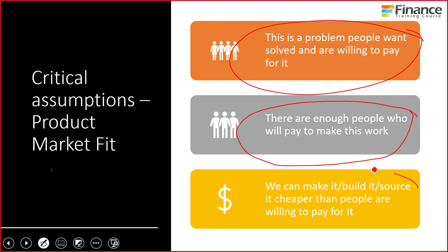The third question is: can you make it, build it, source it cheaper than people are willing to pay for it? These are assumptions. We assume this is possible, but how do you validate them? You have to go out in the real world and ask people. There are multiple ways of validating them — we'll talk about them later, but let's first talk about what other assumptions there are.